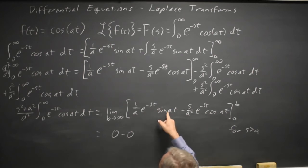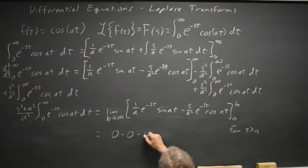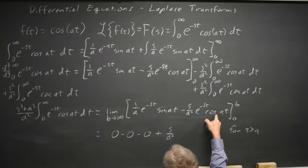E to the zero is one, sine of zero is zero, so minus zero, and then minus negative is plus s over a squared, e to the zero is one, cosine zero is one.